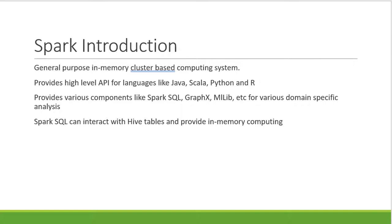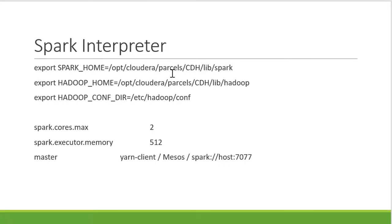The cluster setup would be taken care of by the administrator. I already have the Spark setup done and the details will be provided by the administrators — where Spark is running, who is the master, and what resources can be used. To use Spark, I need to know where it is installed, where the Hadoop configuration files are, and where Hadoop is installed. These paths will be provided by administrators when setting up the Hadoop client on the machine where the Zeppelin server is running.